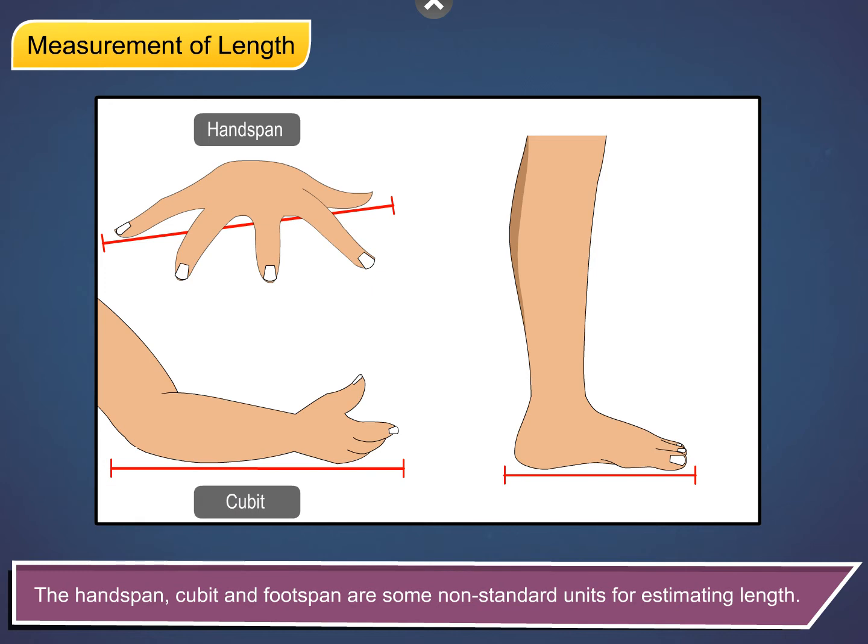The handspan, cubit, and footspan are some non-standard units for estimating length.